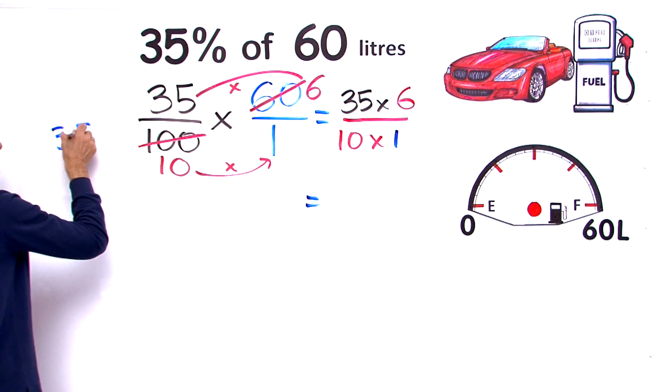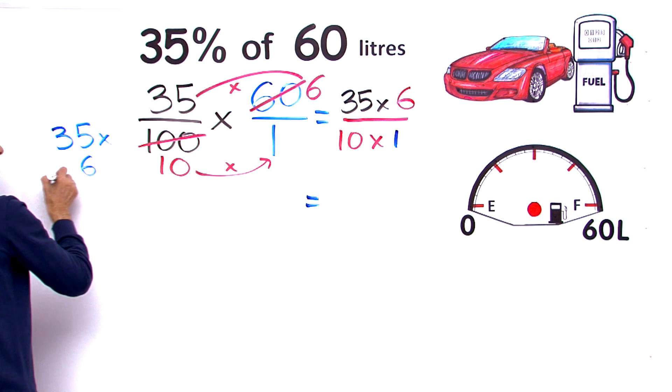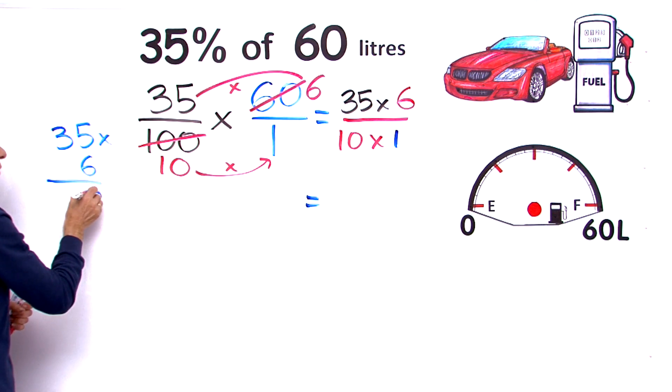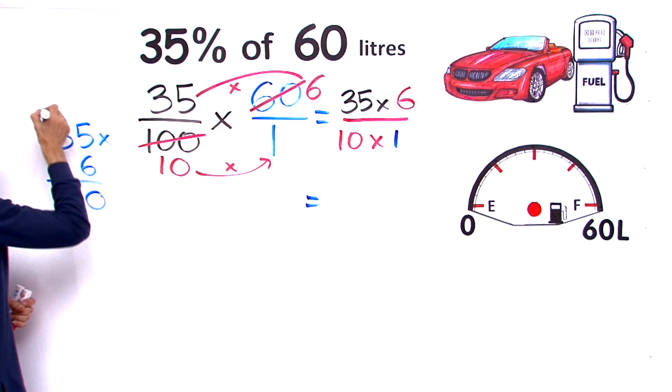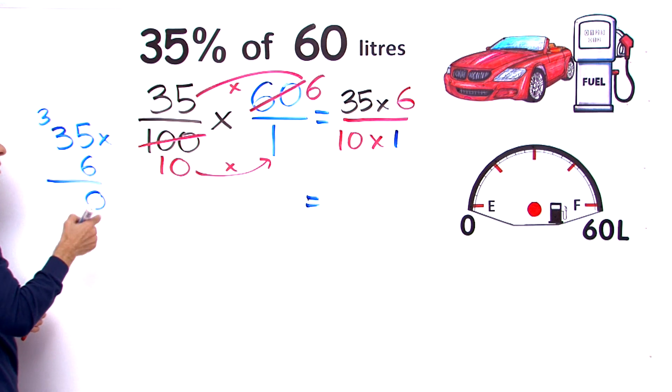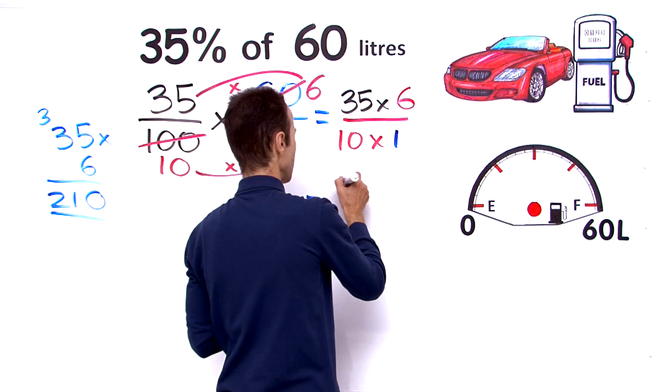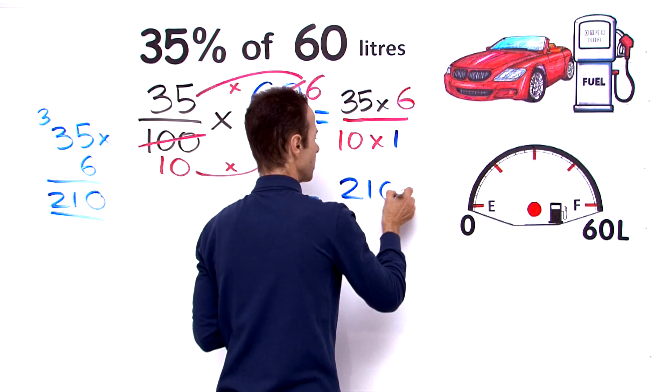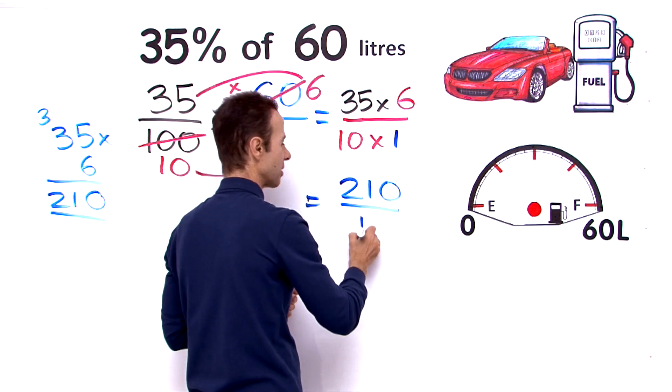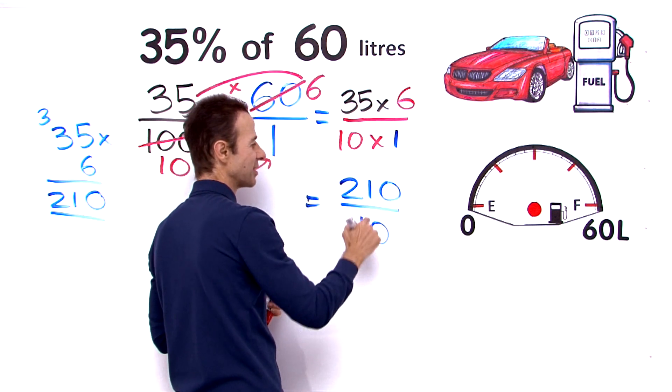35 times 6: 6 times 5 is 30, put down the 0, carry the 3. 3 times 6 is 18, plus 3 is going to be 21—no, 210. 6 times 35 is 210. So we have 210 all over 10 times 1, which is 10. All we have to do is divide the 10 into the 210.